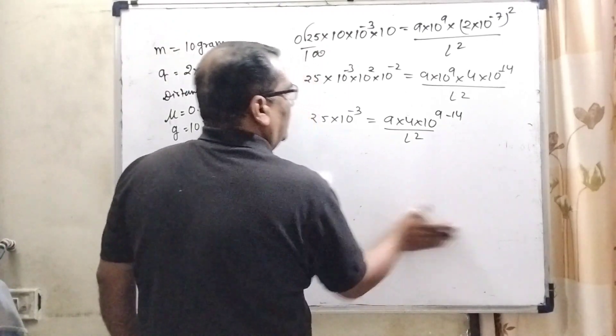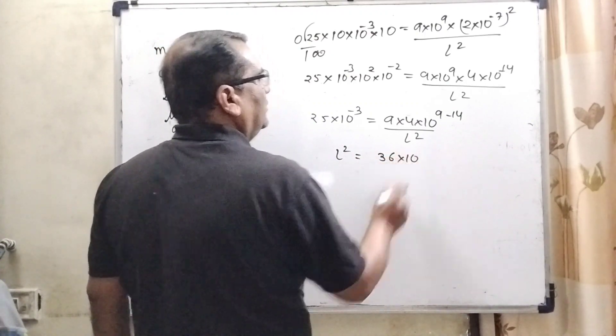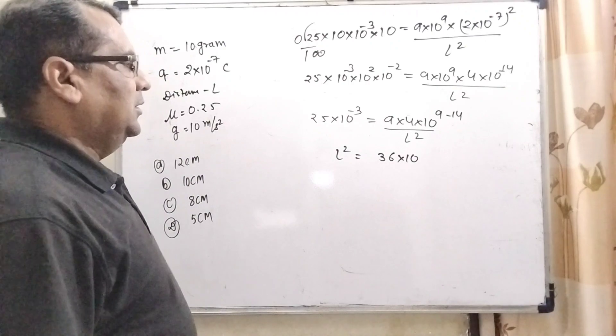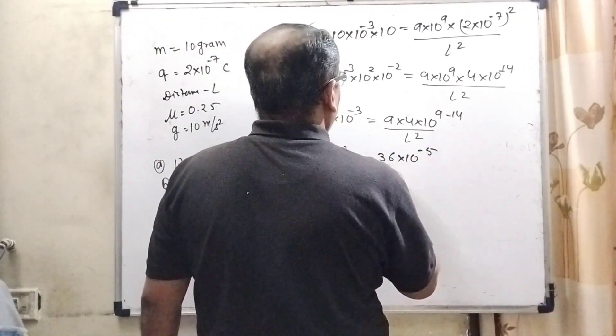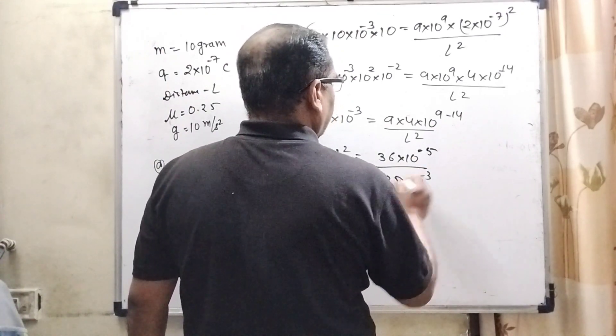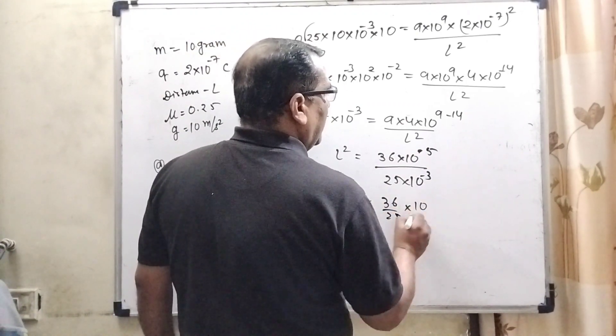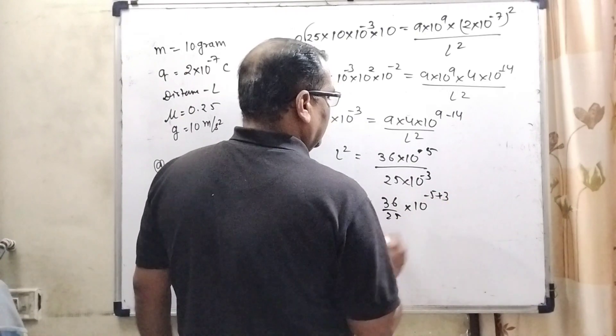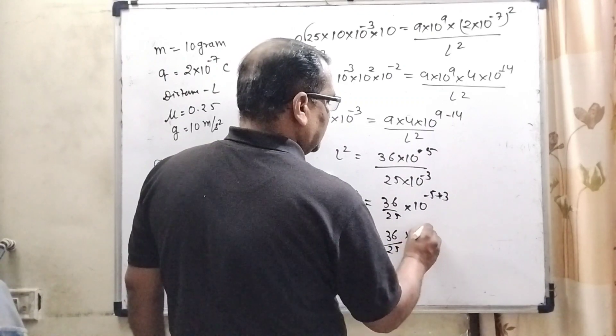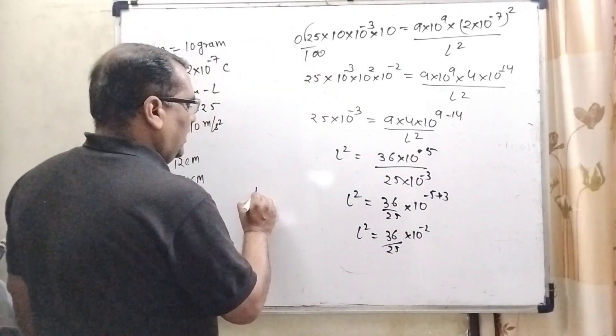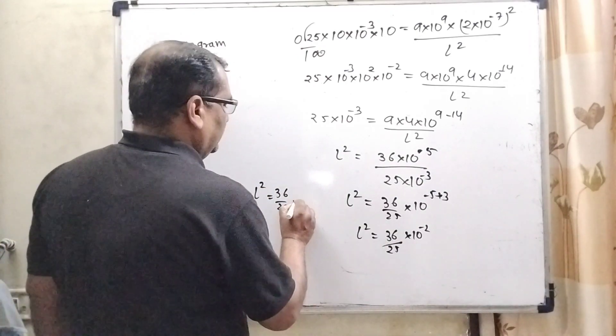Transposing this term: L² = 36×10⁻⁵/25×10⁻³, which can be written as 36/25×10⁻² or L² = 36/25×1/100.